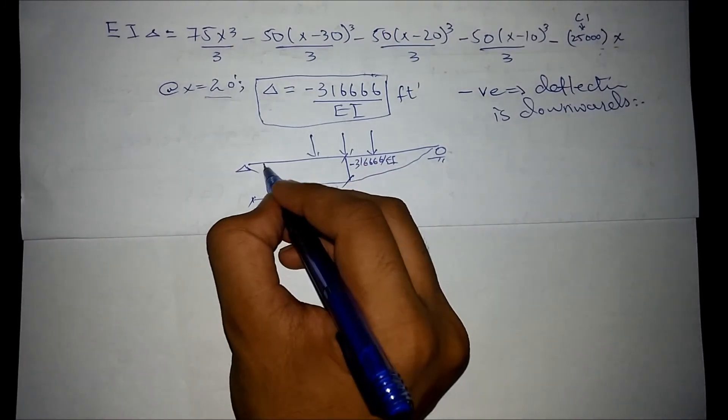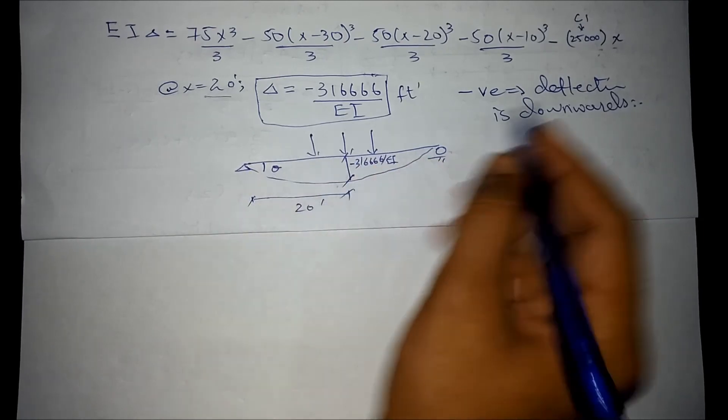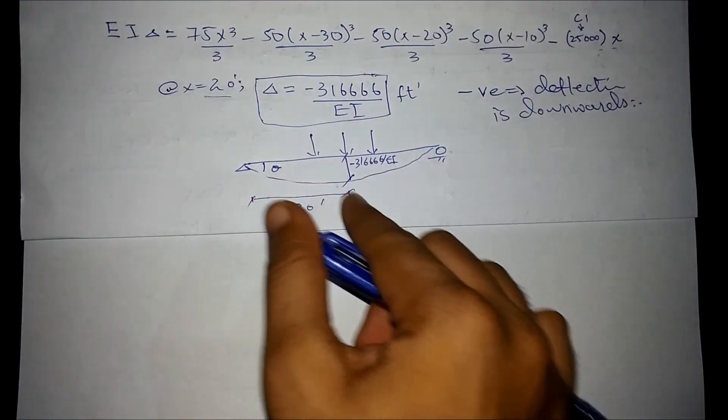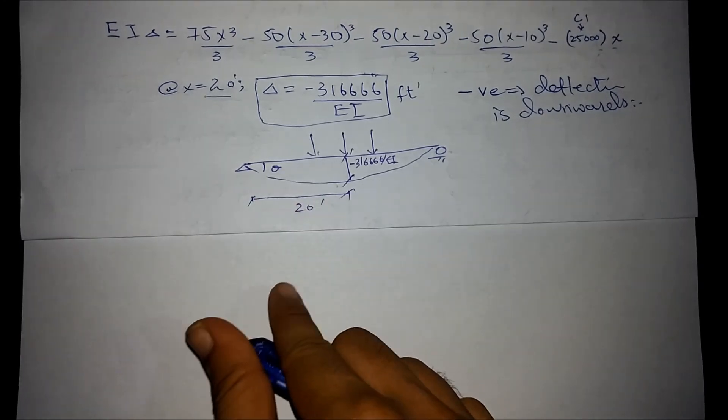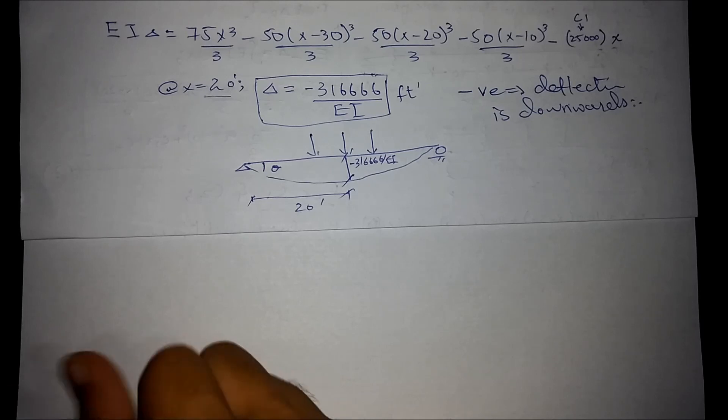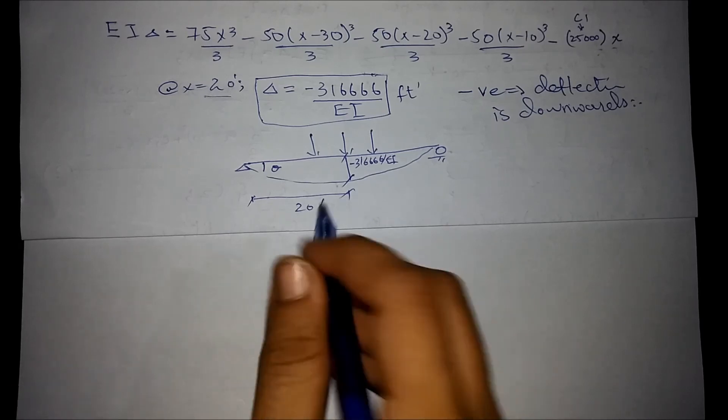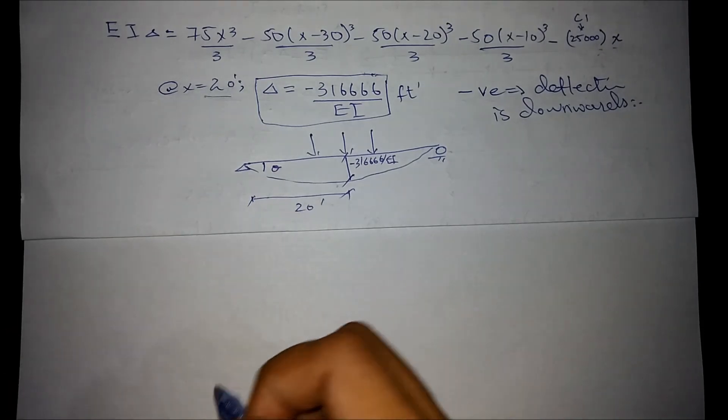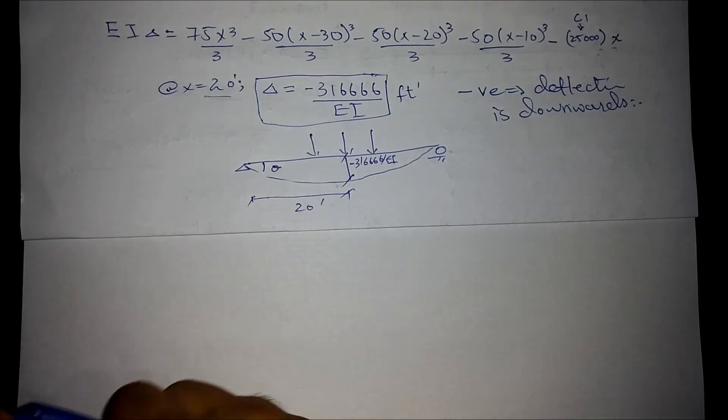Similarly, we can find out the theta at this point by substituting the value of c1 and c2 in the equation of theta and putting the value of x as 20 feet. But it was not required in the question, so no need.